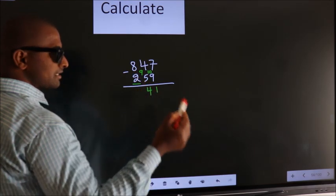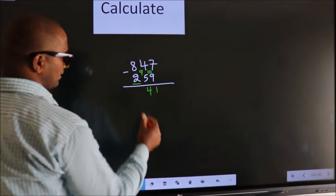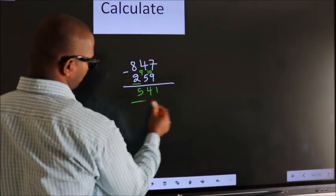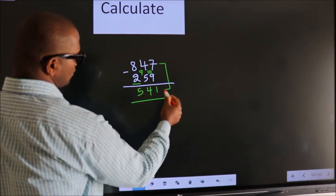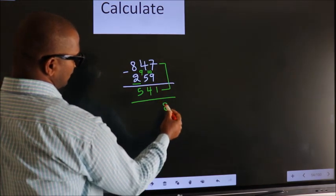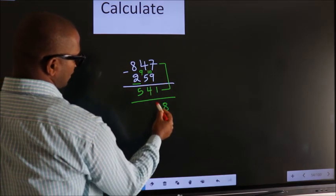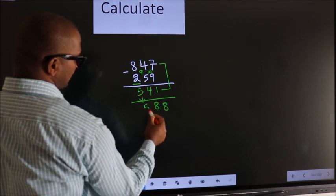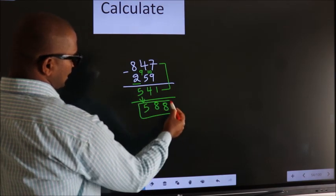...we get 6, decrease by 1 more we get 5. Now add these two: 7 plus 1 is 8, 4 plus 4 is 8. The first digit stays as it is — so this is our answer.